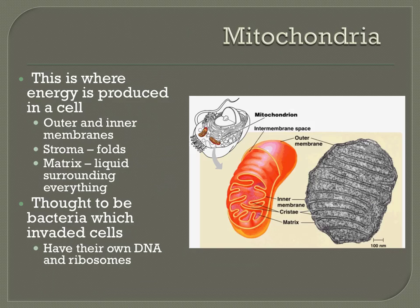Mitochondria are important organelles found in almost all eukaryotic cells. What mitochondria do is break down carbohydrates or sugars and provide energy for the cell through a process called cellular respiration, which will be described in the next unit. Mitochondria contain some important structures, including cristae, matrix, and the inner and outer membranes. Cristae are folds within the mitochondria that give them their distinct appearance. Matrix is the liquid substance found within mitochondria.